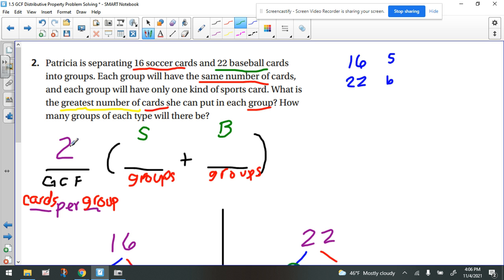Now we already found the GCF, and we got 2. So now the question becomes 2 times what would give us 16, and that would be 8? 2 times what would give us 22 baseball cards, and that would be 11?